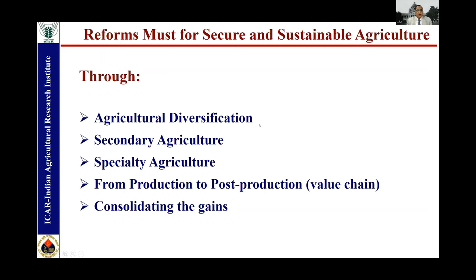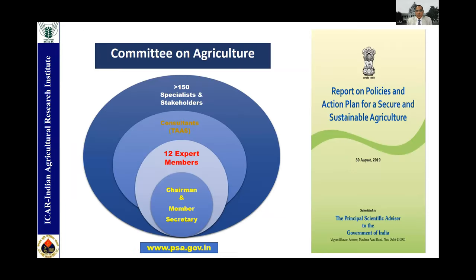The reform should pursue secure and sustainable agriculture through agricultural diversification, secondary agriculture, specialty agriculture, and the transition from production to post-production value chain. This is extremely important because India is currently losing about 35 to 40% of its total production in food grains and particularly in perishable fruits and vegetables, due to poor post-harvest management. Consolidating the gains already achieved are among the major issues.